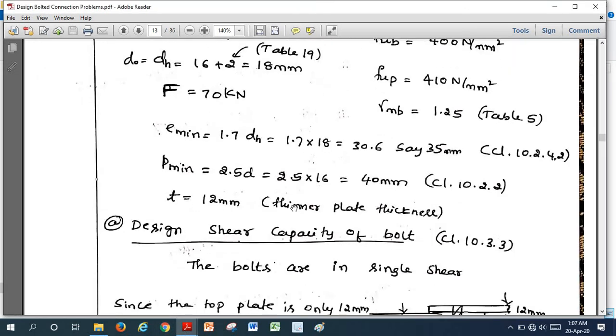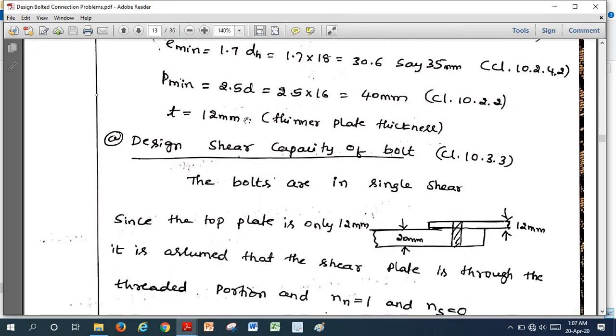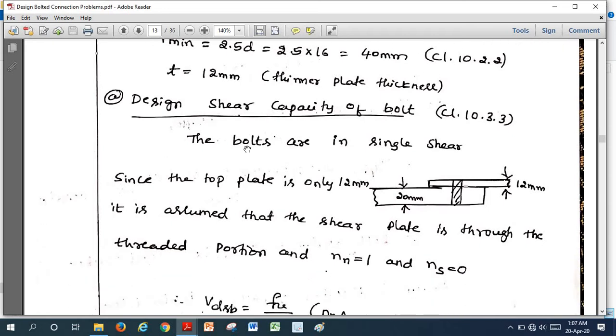For bearing strength, we should take the thinner plate as we already know. For any design, we should calculate the capacity of a single bolt in shear. For this capacity, we should calculate shear strength of the bolt and bearing strength of the bolt. If you take the shear strength of the bolt first, the bolts are in single shear.